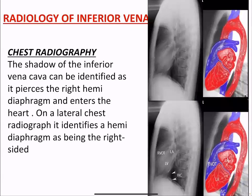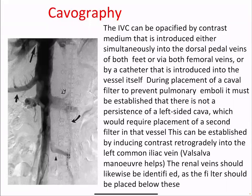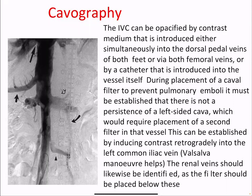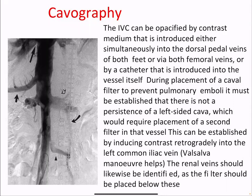Radiology of the inferior vena cava — chest radiograph: the shadow of the IVC can be identified as it pierces the right hemidiaphragm and enters the heart. On a lateral chest film, it identifies the hemidiaphragm as being right-sided. A lateral chest X-ray shows the IVC on the right hemidiaphragm as it pierces through. The IVC can also be opacified by contrast medium introduced simultaneously into the dorsal pedal veins of both feet, via both femoral veins, or by catheter introduced into the vessel itself.